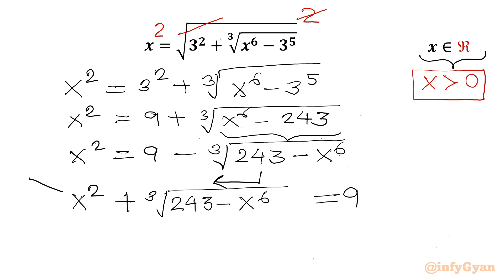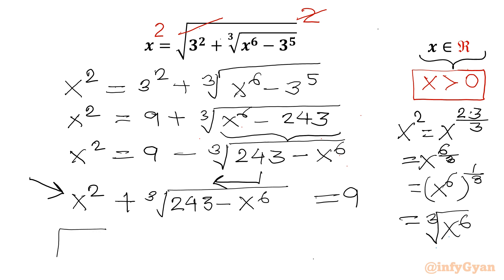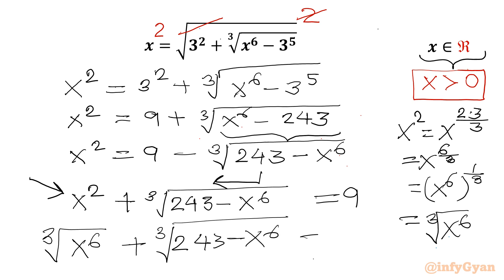Now I am targeting x². I can write x² as x^(2·3/3) = x⁶/³, which using exponent properties is (x⁶)^(1/3), which is nothing but ∛(x⁶). So the equation becomes ∛(x⁶) + ∛(243 − x⁶) = 9.